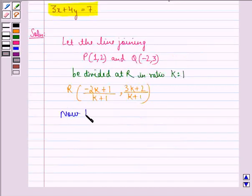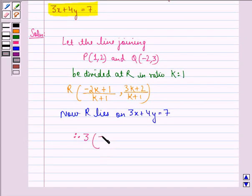Now, R lies on the line 3x plus 4y equals to 7. Therefore, 3 into (-2k+1)/(k+1) plus 4 into (3k+2)/(k+1) is equal to 7.